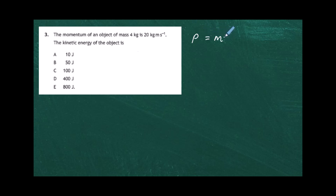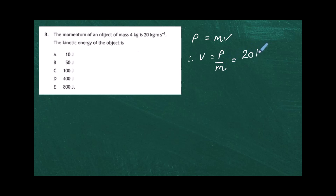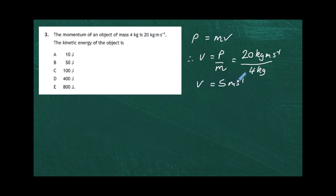From the momentum equation we can find the velocity: v equals momentum p divided by mass. That's 20 kilogram meters per second divided by 4 kilograms — the kilograms cancel — giving v equals 5 meters per second.